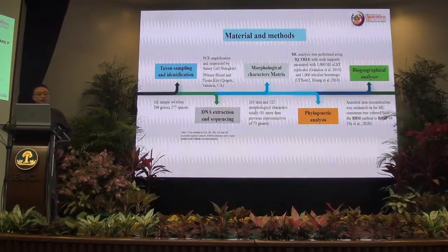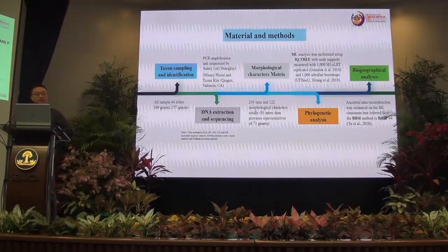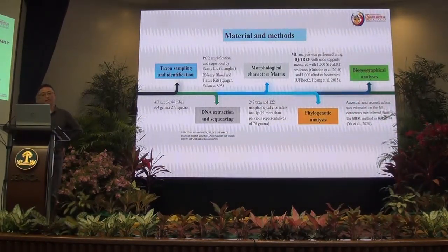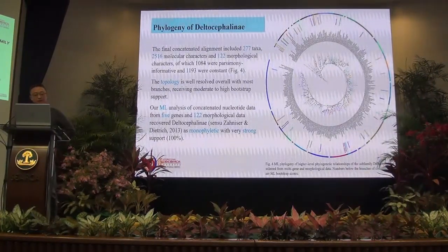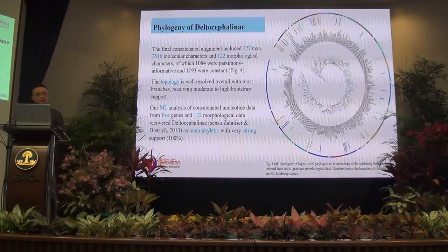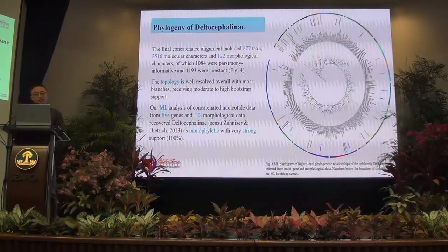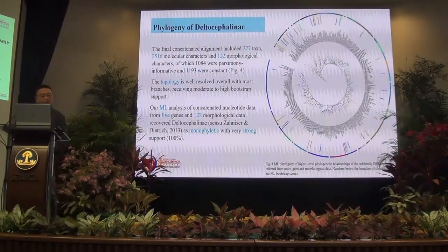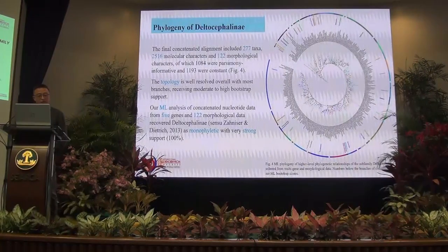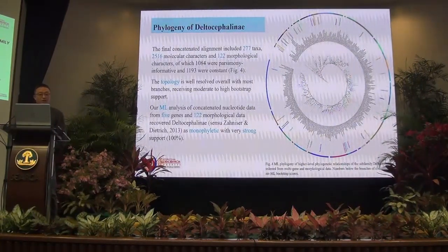In my study, I include all samples of 44 tribes, 204 genera, and 270 species. I constructed the ML tree in FigTree. The final phylogenetic alignment includes 277 taxa, 2530 nucleotide characters, and 500 morphological characters. The topology is well resolved overall, with most branches receiving moderate to high bootstrap support.